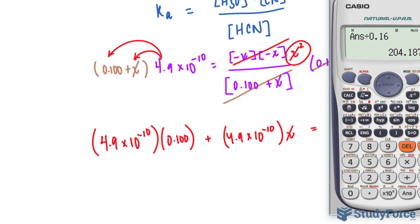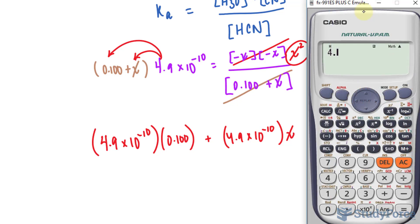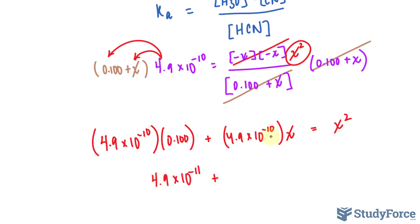Let's multiply these two together. 4.9 times 10 raised to the power of negative 10 multiplied to 0.100 gives us such a small number plus 4.9 times 10 raised to the power of negative 10 X. And I'll bring this over where I have negative X squared is equal to 0. This is a quadratic equation, so we'll need the quadratic formula.